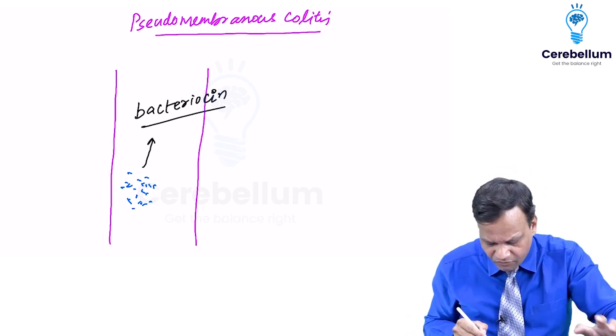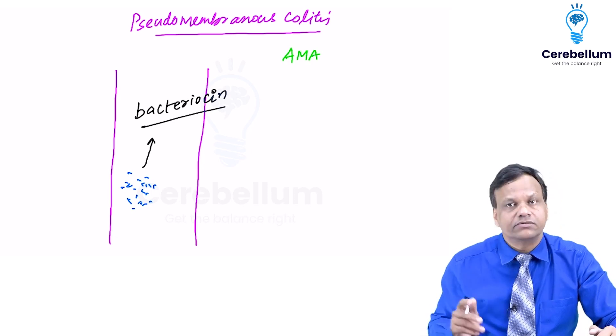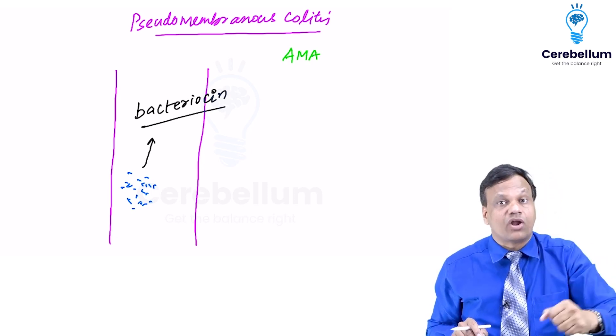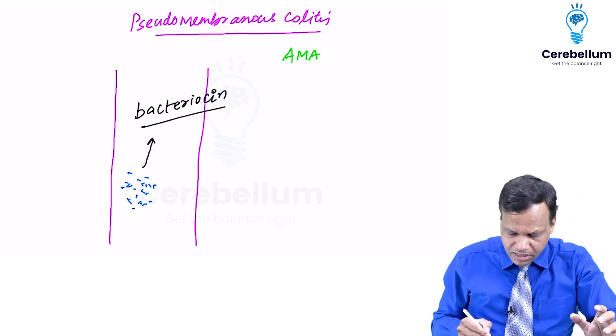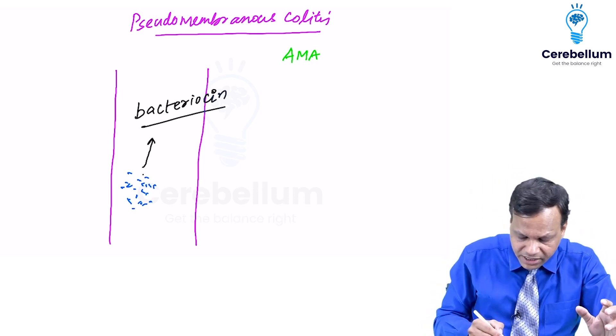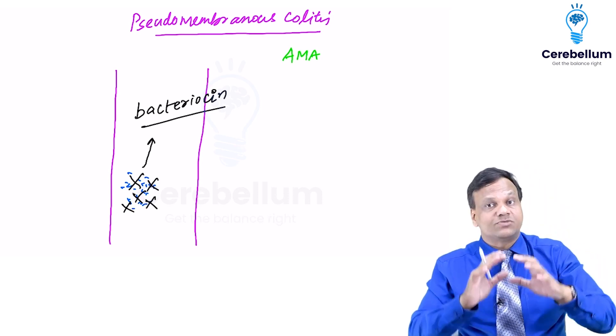Now what happened? We give a broad spectrum antimicrobial agent like clindamycin or like third generation cephalosporin. So when we give them what will happen? They will kill the commensal bacteria also. So the normal commensal bacteria has been killed.